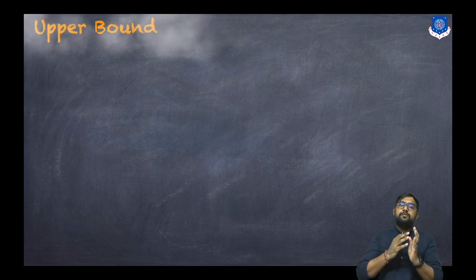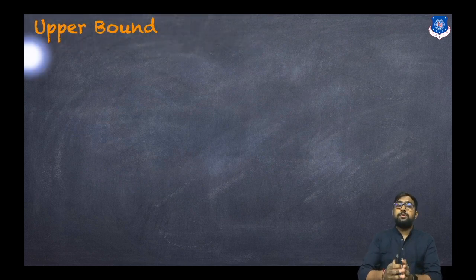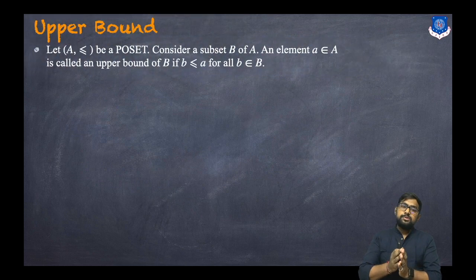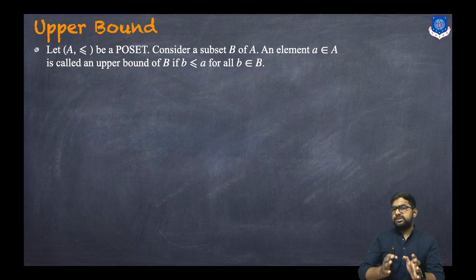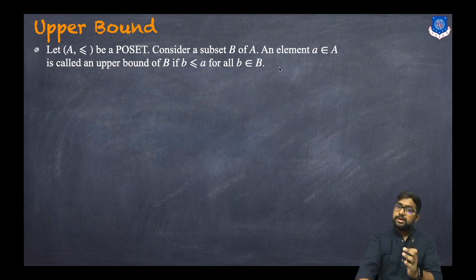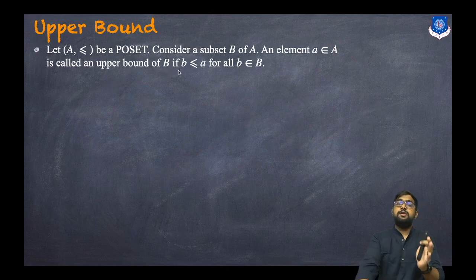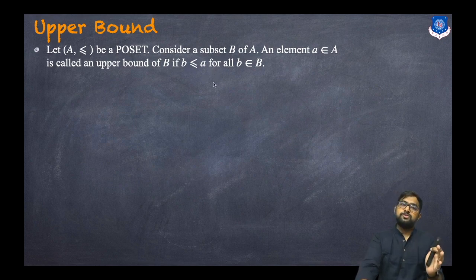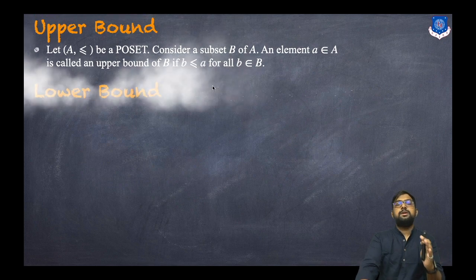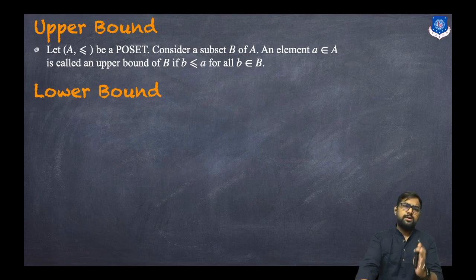First, let's understand what an upper bound is. Let (A, ≤) be a poset and consider a subset B of A. An element 'a' belonging to A is called an upper bound of the subset B if b ≤ a for all b belonging to B.